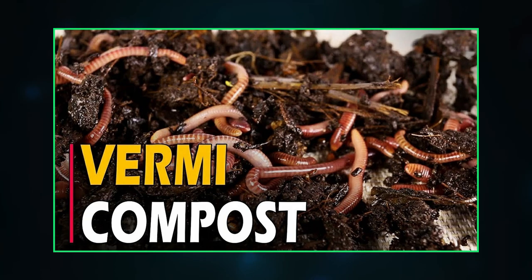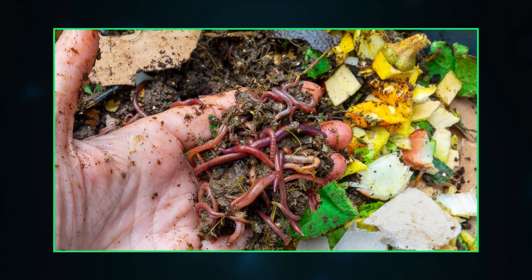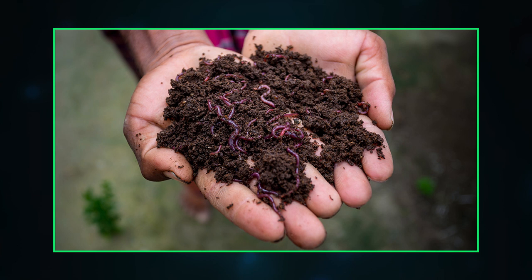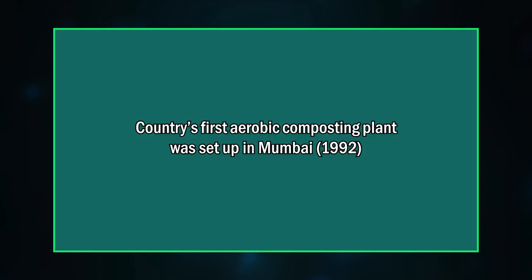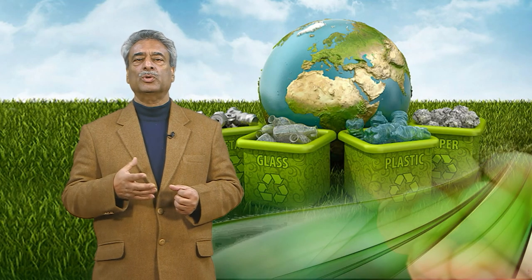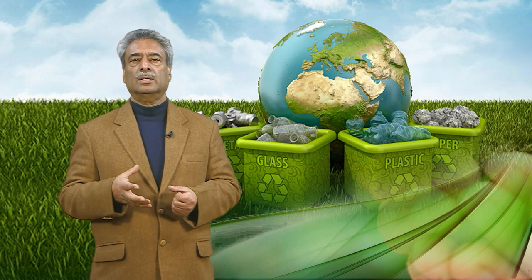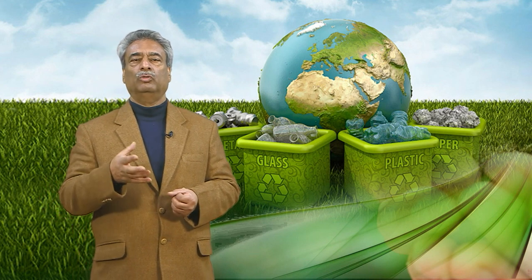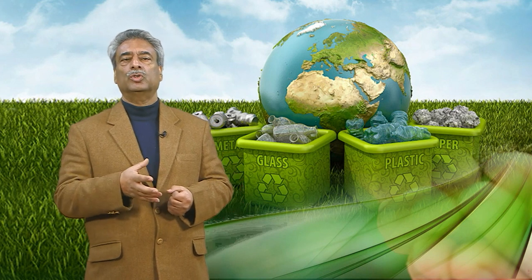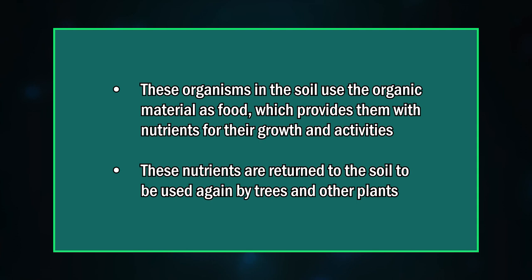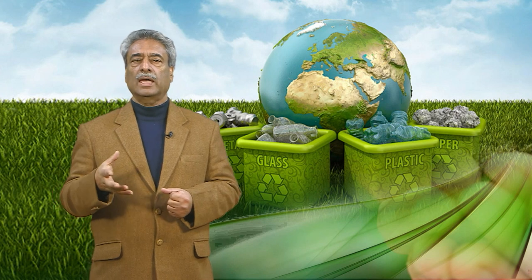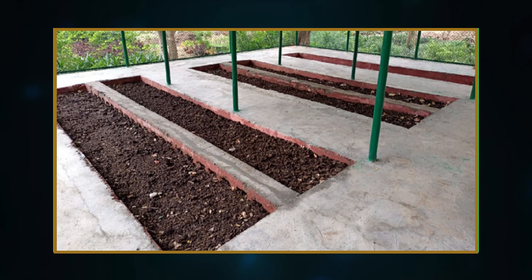Vermicomposting has become very popular in recent years. In this method, worms are added to the compost, helping to break down the waste, and their excreta makes the compost very rich in nutrients. India's first aerobic composting plant was set up in Mumbai in 1992. In vermicomposting, dead and dry leaves and twigs decompose and are broken down by organisms such as worms and insects, and finally by bacteria and fungi, forming a dark, rich soil-like material called compost. These organisms use organic material as food, and the nutrients are returned to the soil for use by trees and other plants, recycling nutrients in nature.